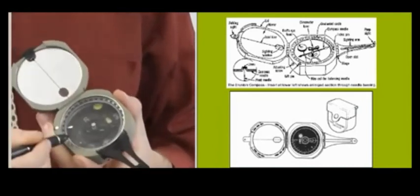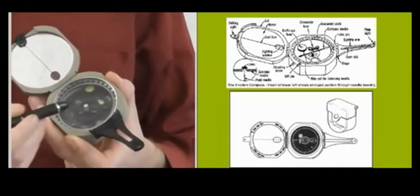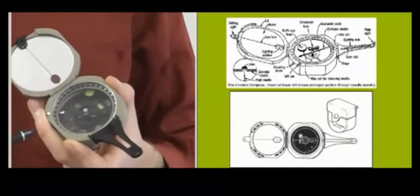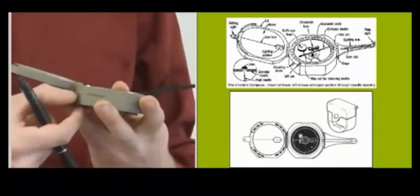And as you rotate that, it rotates the bezel within the compass space that has your bearing degrees on there. So when you're setting your magnetic declination, this is the screw that you'll use.